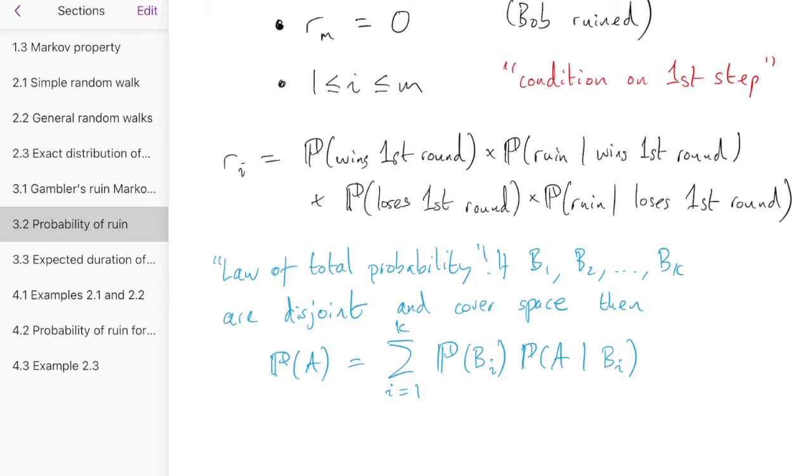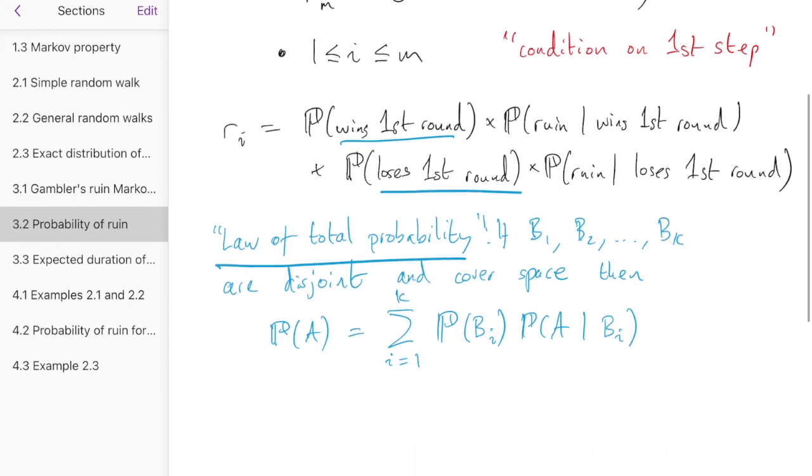And of course, here we're using the partition, or the disjoint events that cover space, of Alice winning the first round or losing the first round. Right, one of those two things has got to happen, but they can't both happen, so that fulfills the rules of the Law of Total Probability. So I'm happy for you to take the statement of conditioning on the first step just as an obvious thing. But if you did want to justify it using smart probability words, you would say you're using the Law of Total Probability.